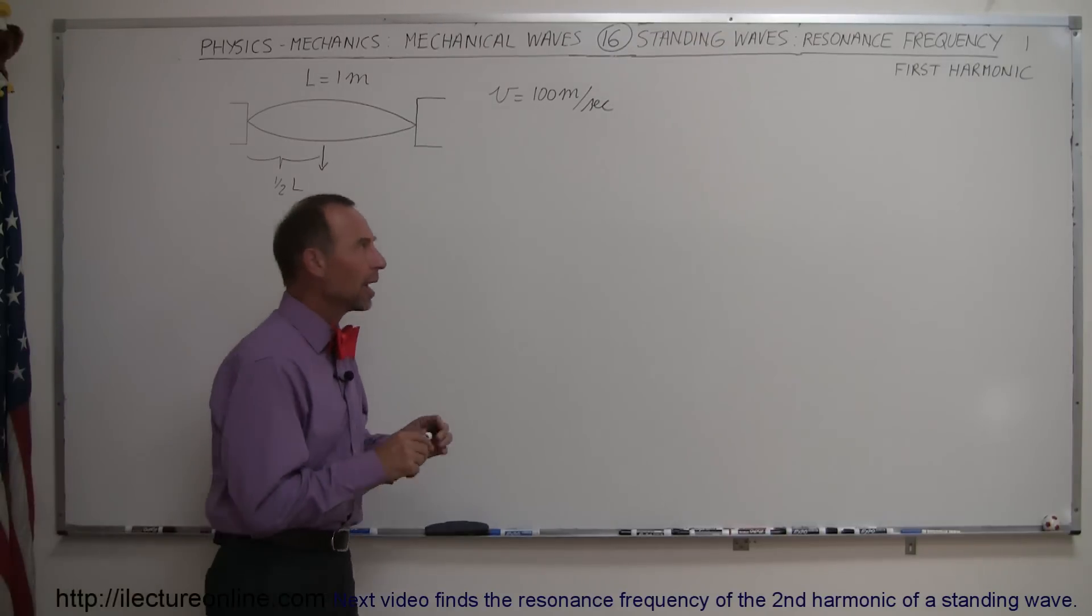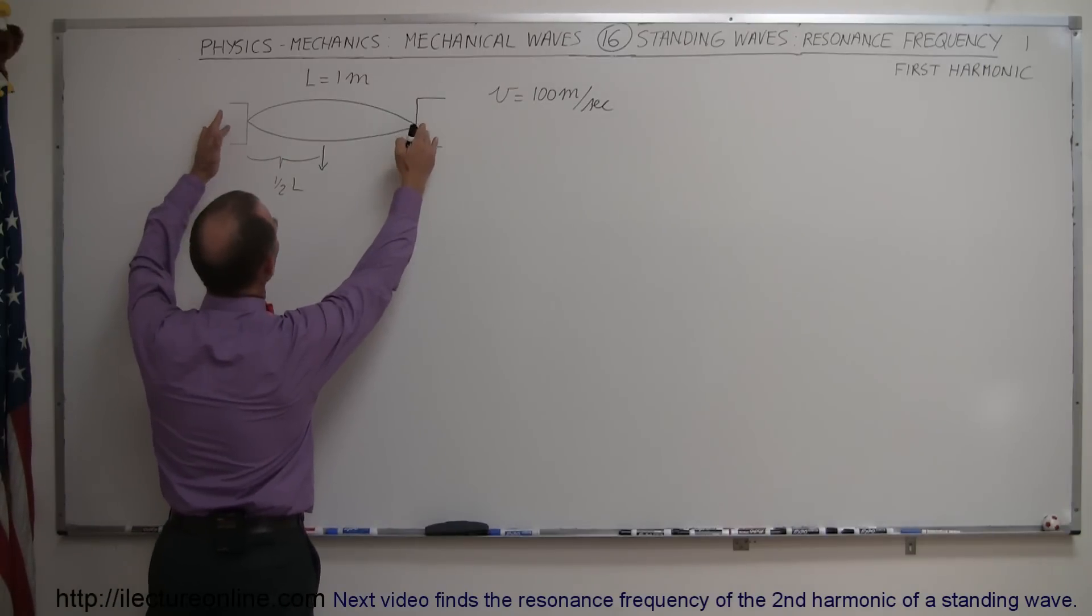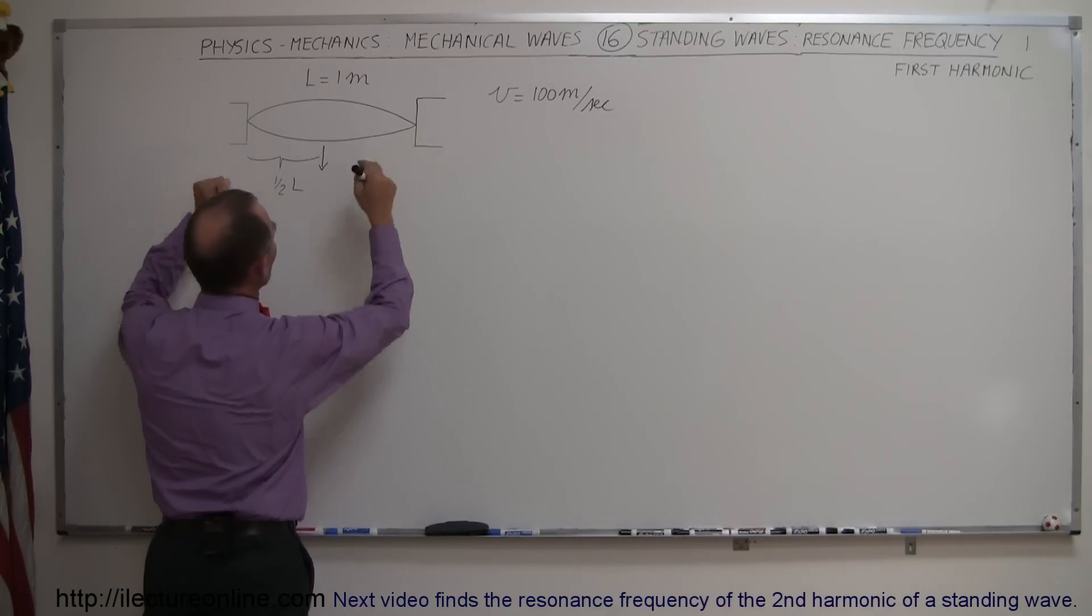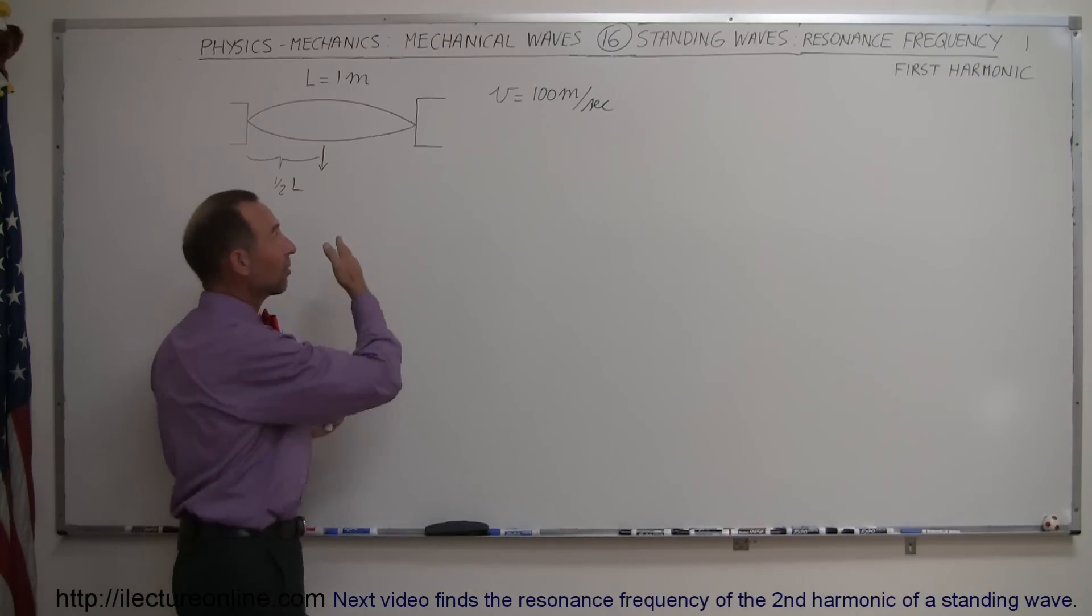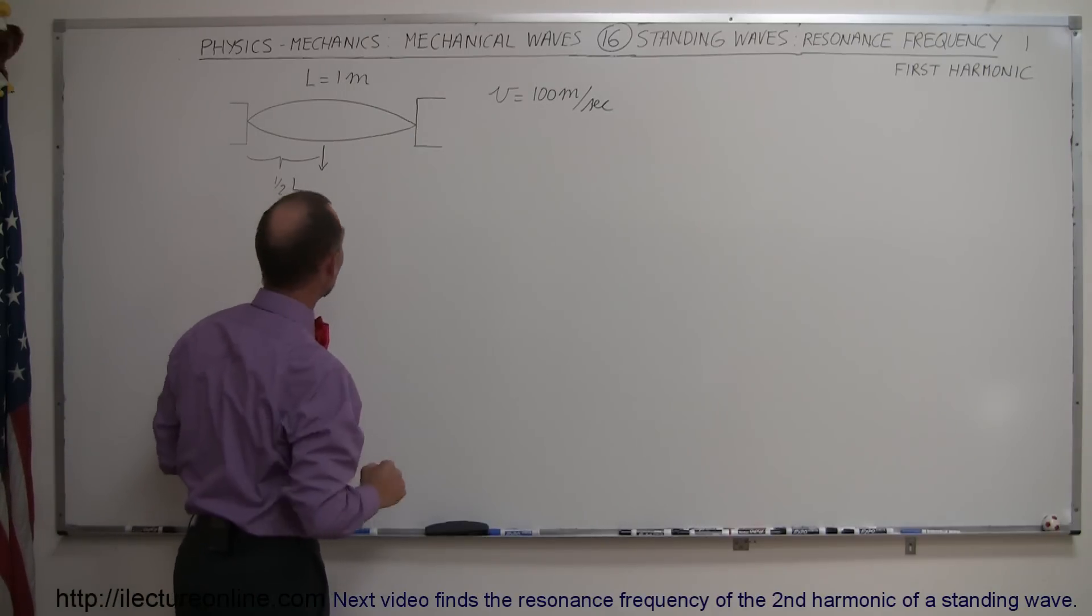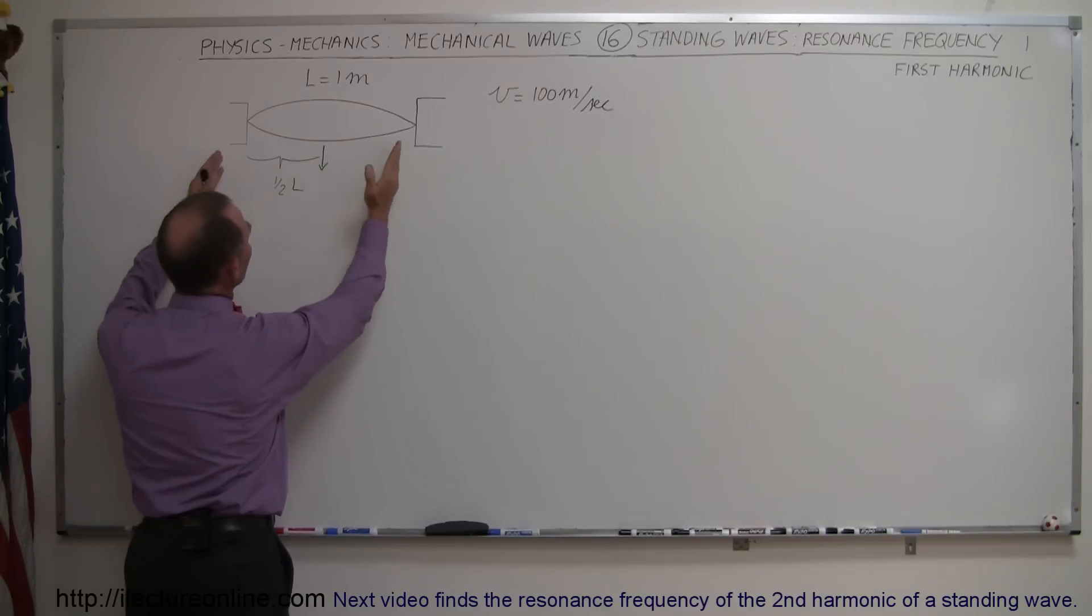Also, it's called the first harmonic. We have a situation where we have a string tied between two blocks. Let's say the string has a length of one meter. Let's say that the tension is such that the velocity of the string is 100 meters per second, and we take the string at the very middle and pull it down, let it go.